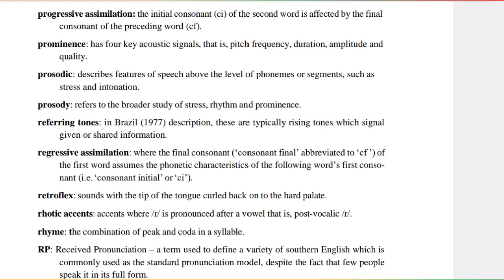Consonant initial, or CI. Retroflex: sounds with the tip of the tongue curled back onto the hard palate. Rhotic accents: accents where r is pronounced after a vowel, that is, post-vocalic r. Rhyme: the combination of peak and coda in a syllable. RP (Received Pronunciation): a term used to define a variety of southern English which is commonly used as the standard pronunciation model, despite the fact that few people speak it in its full form.